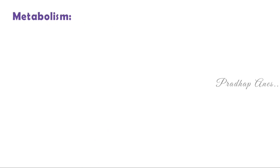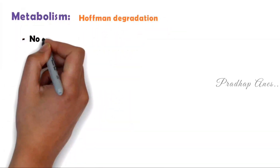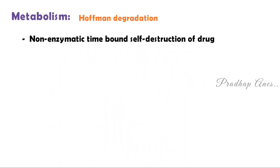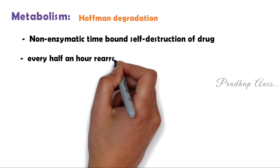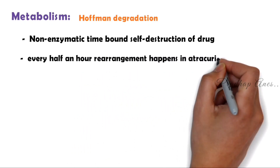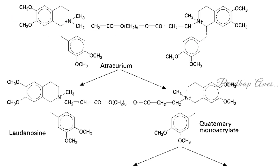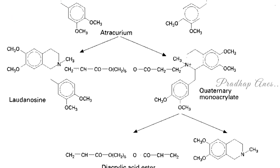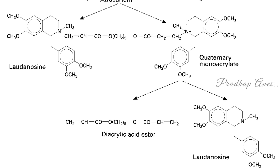Atracurium has a unique mode of metabolism called Hoffman degradation — a non-enzymatic, time-bound self-destruction of the drug. Every half hour, rearrangement happens in Atracurium molecules and it is metabolized. The majority of the drug undergoes this spontaneous degradation in plasma.